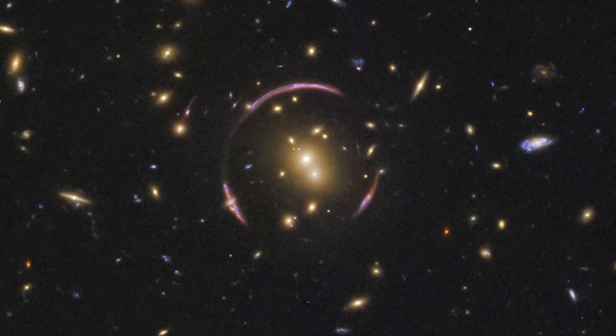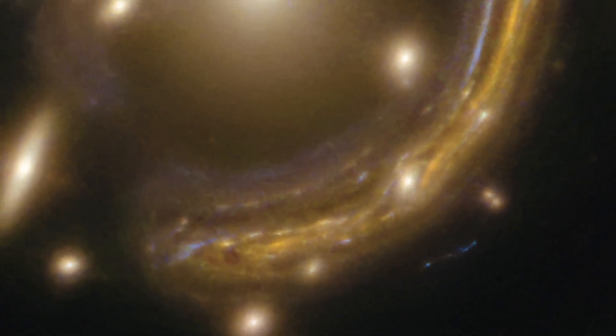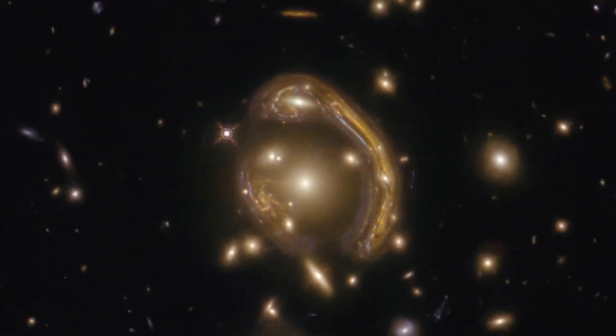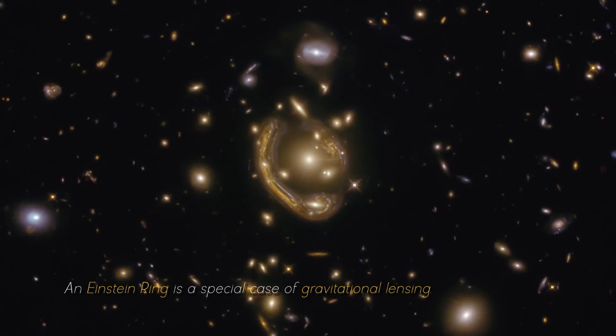What is an Einstein Ring and how is it formed? Before diving into the details of the fossil galaxy, it is important to understand the basics of this phenomenon. An Einstein Ring is a special case of gravitational lensing, a phenomenon predicted by Albert Einstein's general theory of relativity.